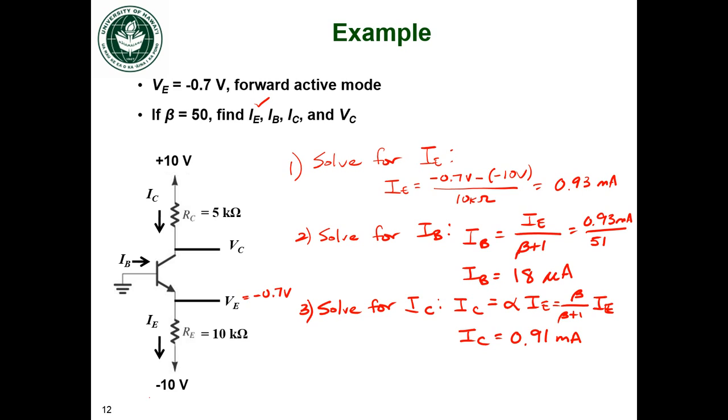Last thing is going to be to solve for my collector voltage. I can use Ohm's law again. My collector voltage is going to be the voltage of the positive supply, 10 volts, minus the voltage dropped across my collector resistance. So that's IC times RC. Plug in the value of IC, RC is 5 kilo ohms, and we'll get 5.45 volts.